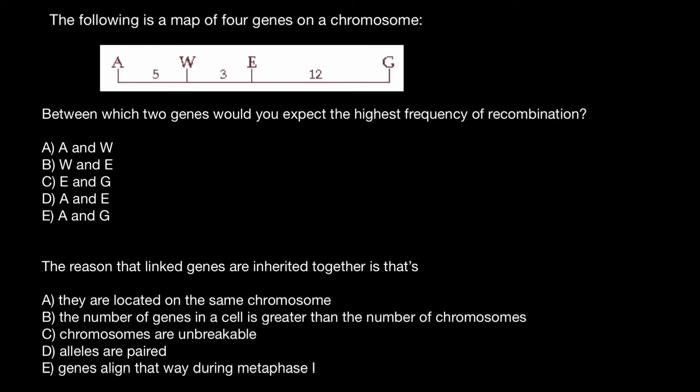Hello and welcome to Nikolai's Genetics Lessons, and today's problem is the following. It's a map of four genes on a chromosome. Between which two genes would you expect the highest frequency of recombination?